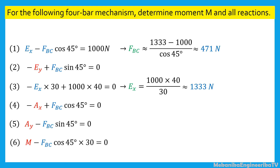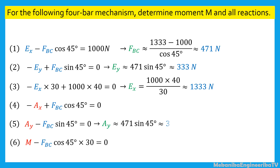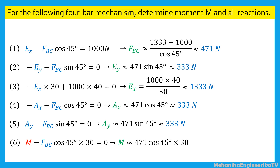Once we have determined FBC, it is possible to use successively equations 2, 4, 5, and 6 to determine EY, AX, AY, and moment M respectively. Using equation 2, we obtain EY is equal to 471 times sine 45 degrees, or 333 Newtons. Using equation 5, AY is also equal to 471 times sine 45 degrees, or 333 Newtons. Using equation 4, AX is equal to 471 times cosine 45 degrees, or 333 Newtons. Using equation 6, the moment M is equal to 471 times cosine 45 degrees times 30. Thus the moment M is equal to 10,000 Newton-centimeters or 100 Newton-meters.